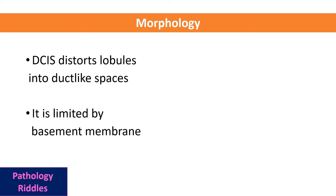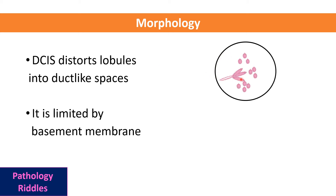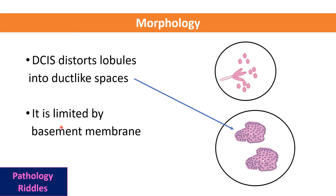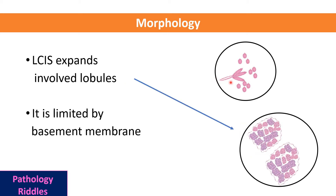In DCIS or ductal carcinoma in situ, the normal architecture is distorted. There will be a space that looks like a duct, filled with atypical cells. The only difference between ductal carcinoma and ductal carcinoma in situ is that the cells do not come out of the basement membrane — it is not infiltrated.